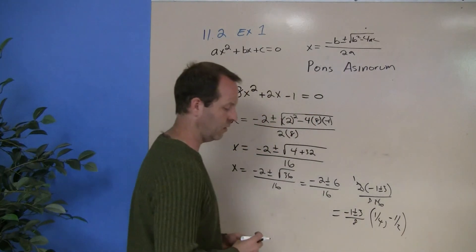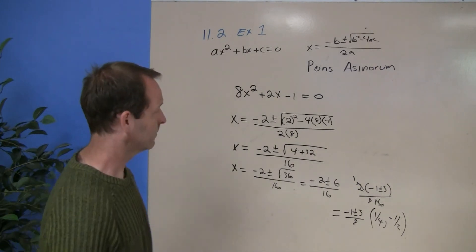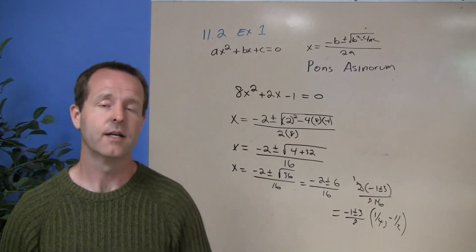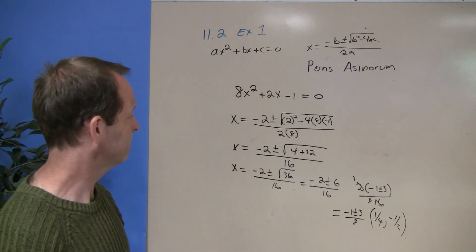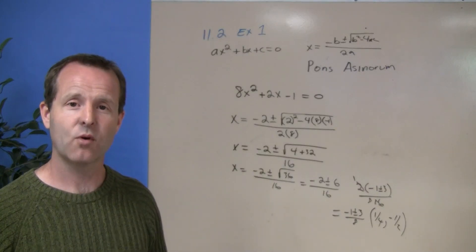So there's my two solutions, 1 fourth, and negative 1 half. I would never have guessed that what the solutions to this original quadratic equation were those two answers. Good job. Guys, let's practice some more, okay?